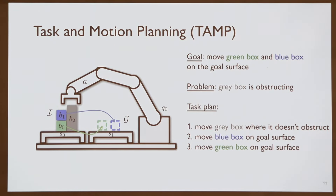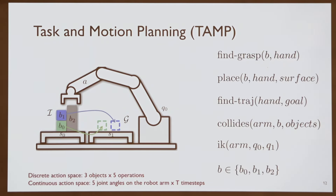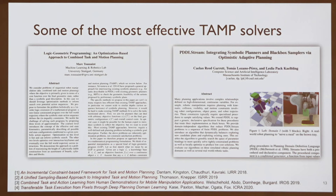A toy example of TAMP: you want to move a green box and a blue box onto goal surface S1, but a gray box is obstructing them. Without it being in the specification, you need to figure out that an intermediate goal is to move the gray box out of the way first. This is typically a discrete and continuous optimization or sampling problem that scales poorly—even with three objects, five operations, robot joints, and planning horizon, it becomes very challenging quickly.